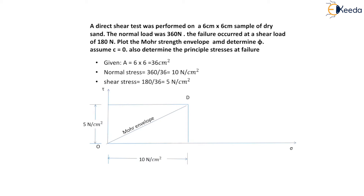In order to draw the Mohr circle, we draw a perpendicular to the Mohr envelope from point D. This perpendicular intersects the sigma axis at a point C. Taking this point of intersection C as the center and CD as the radius, a Mohr circle is drawn. The left-hand side intersection of the Mohr circle with the sigma axis represents the minor principal stress, and the right-hand side intersection represents the major principal stress.